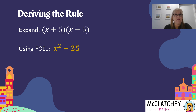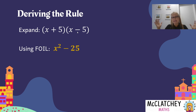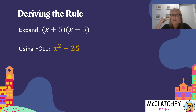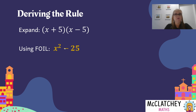You can see with this particular rule, when we've got this situation that looks a bit like a perfect square but the only difference is a plus here and a minus here, instead of ending up with three terms when we expand, we end up with two terms — a squared term here and a squared term here, with a subtraction in the middle. That's why it's called the difference of two squares: two squared numbers with a difference, meaning take away, in the middle. DOTS for short.